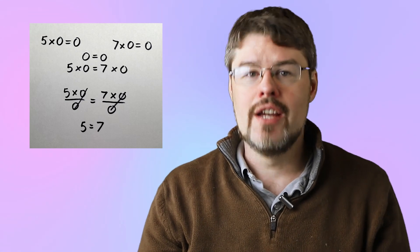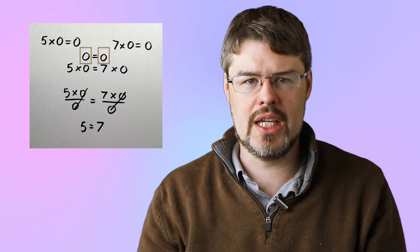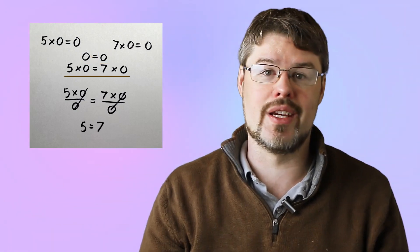It starts off easily enough. Five times zero is zero, seven times zero is zero, and those two zeros are the same, meaning we have five times zero equals seven times zero. Easy enough.